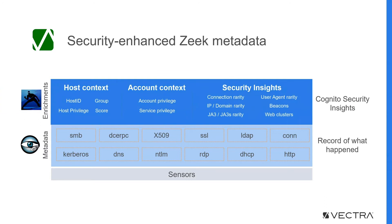Vectra also uses its core machine learning engines and extracts security insights that are then embedded into the metadata. This includes things like beaconing activity, domain rarity, privilege, and host ID. Together, these provide powerful building blocks that threat hunters can combine with their own expertise to quickly reach conclusions.